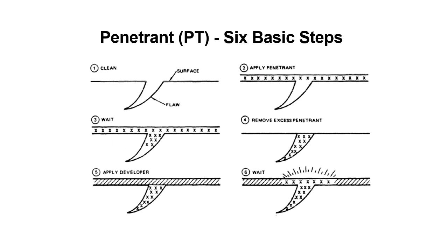I know I'm beating a dead horse here on our six basic steps, but you're going to get your money's worth on penetrant. First picture: you clean it. Step two: you apply the penetrant. See how nothing's soaked into the crack or the defect there? Three: you wait — see how it's seeping into the crack there. Four: you remove the excess penetrant. The penetrant's gone from the surface but it's still in the defect. You apply the developer, then you wait, and you see how the dye from the penetrant soaks out to the surface. You've got that contrast between what the dye was in the crack and what was on the surface.